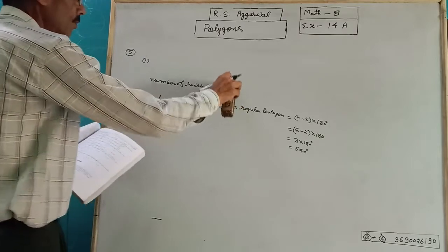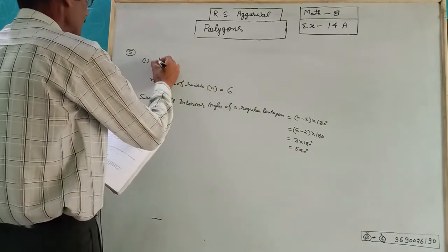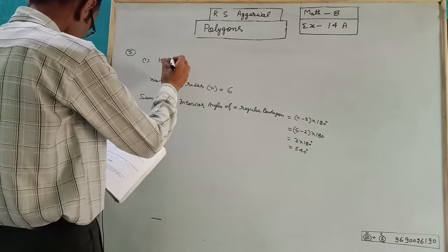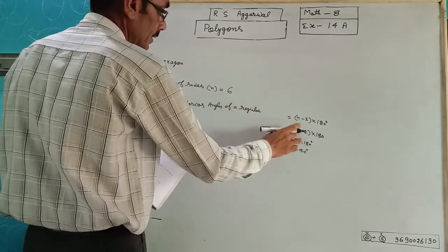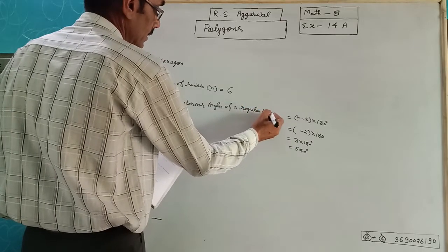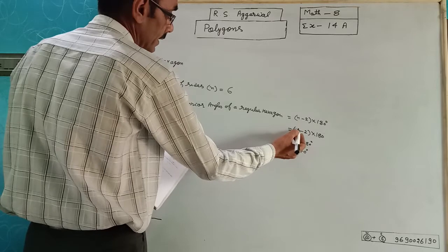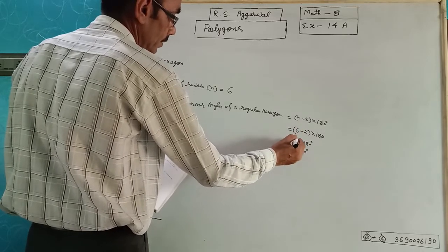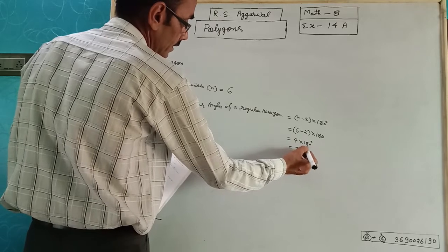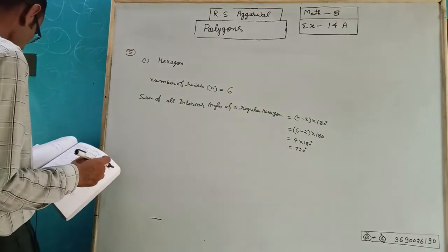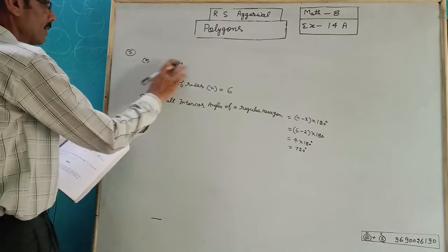Second part is hexagon. Hexagon has 6 sides. Using the same formula, only change N to 6: (6 minus 2) into 180 equals 4 into 180, which equals 720 degrees. Second part is complete. Third part is: